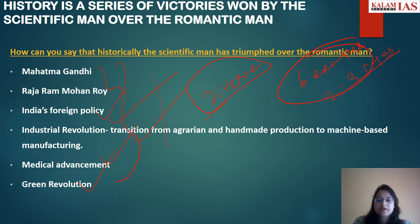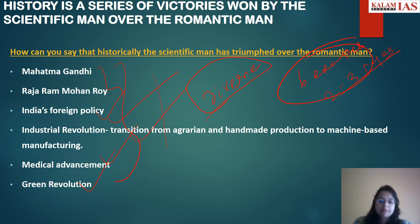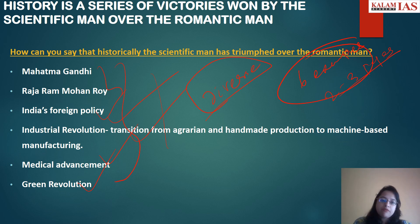Starting with Mahatma Gandhi — despite carrying a valid ticket, he was thrown out of the first-class compartment in South Africa, which was a huge setback. But instead of getting swayed by the temptation to adopt a militant approach — which romantic men would have adopted — he espoused a scientific method and spearheaded a non-violent movement using Ahimsa and Satyagraha. The movement culminated in giving rights to black people at par with white people and eradication of apartheid in South Africa.